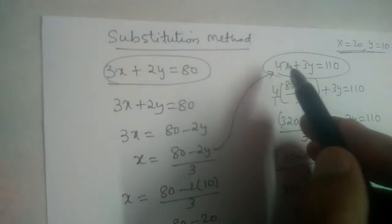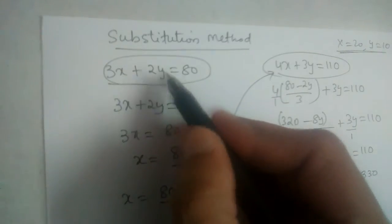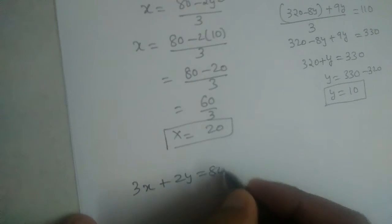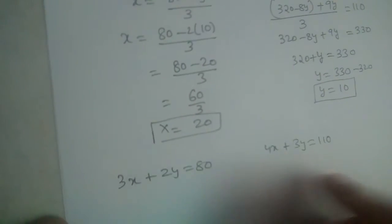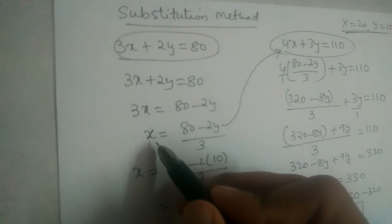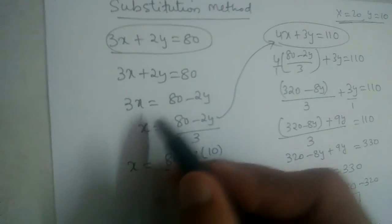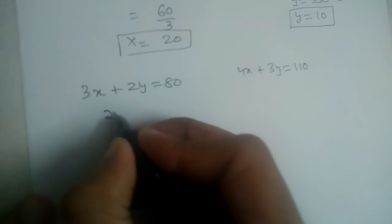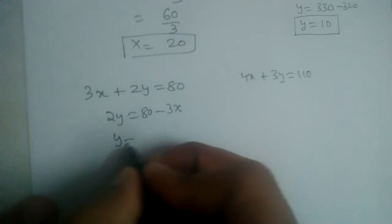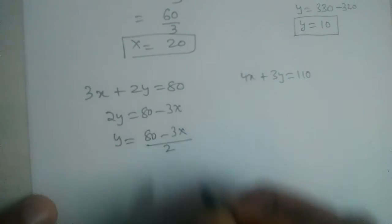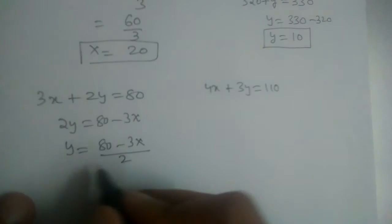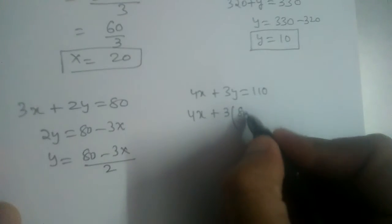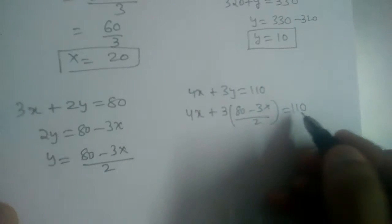Now let us try the other approach — finding the value of y in terms of x. From the first equation 3x + 2y = 80, we get 2y = 80 − 3x, so y = (80 − 3x) / 2. We substitute this value of y into the second equation: 4x + 3 × (80 − 3x)/2 = 110.